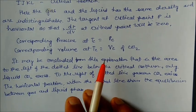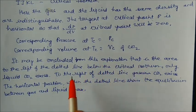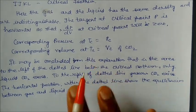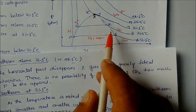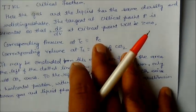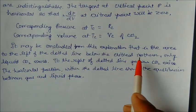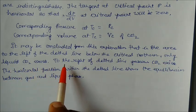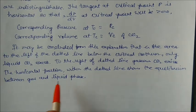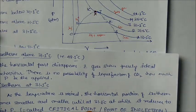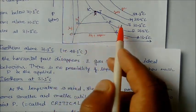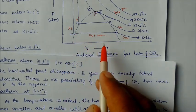From this explanation, to the left of the dotted line below the critical isotherm, only liquid CO2 exists. To the right of the dotted line, gaseous CO2 exists. The horizontal portions within the dotted line show the equilibrium between gas and liquid phase. So this side is gas, this side is liquid-vapor in equilibrium, and this will be totally liquid. These are very important concepts for examination purposes.